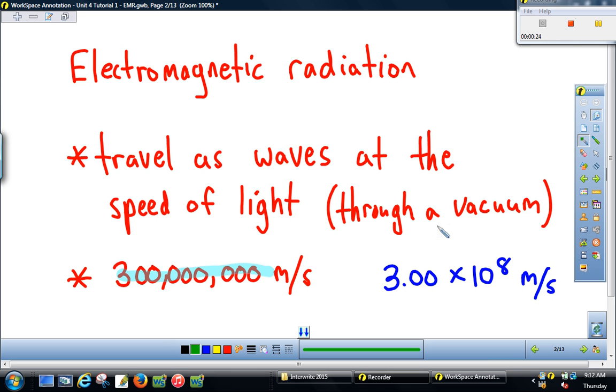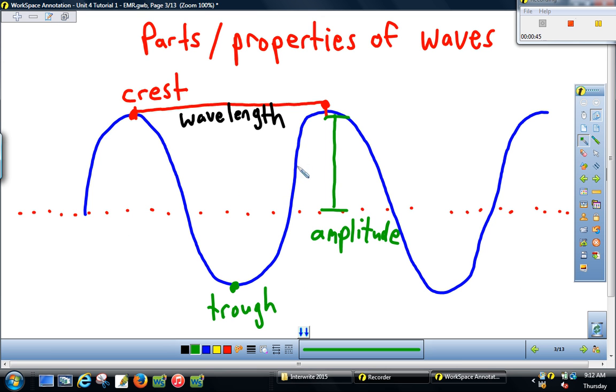So how fast is that? It is 300 million meters per second. We typically write that in scientific notation as 3.00 times 10 to the eighth meters per second, and this is equivalent to about 186,000 miles per second. So light can go around the Earth's equator if it could bend over seven times per second. That's pretty cool.